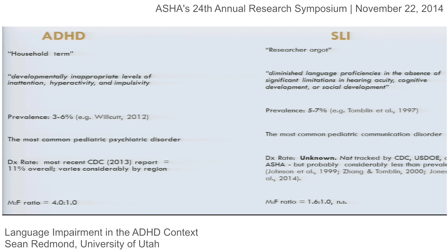Both conditions share the notion of unexpected difficulty relative to other areas and are comparably matched in terms of prevalence rates from epidemiological reports. ADHD is a condition monitored by the Centers for Disease Control — we get information on disconnects between the prevalence rate and how many kids are actually being diagnosed. There is a discrepancy: far more kids are being diagnosed with ADHD than the epidemiological reports would suggest.